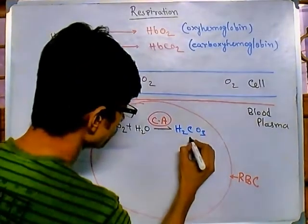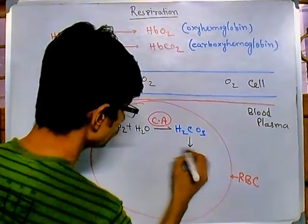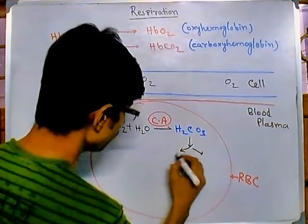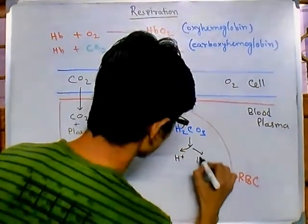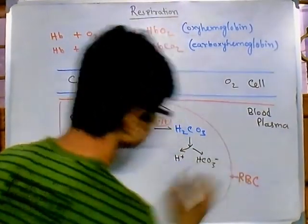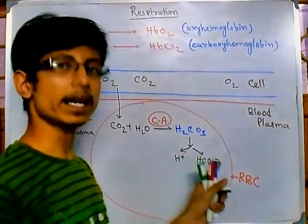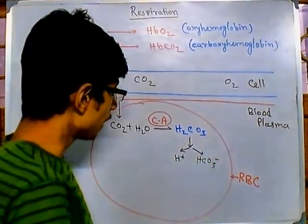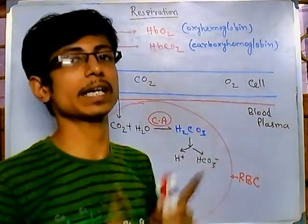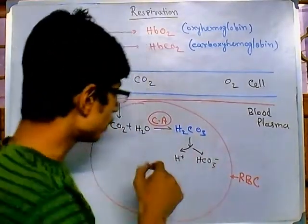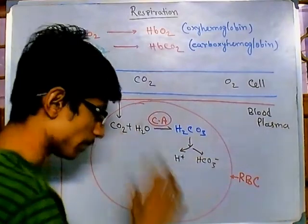Now this carbonic acid will be broken down into two important sections. One is hydrogen ion, another one is bicarbonate ion. H+ and HCO3-. Now from here it will take two different ways and both of the ways are equally interesting. One way is using this hydrogen and that is the major way.